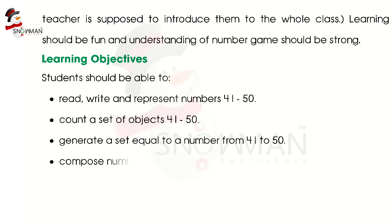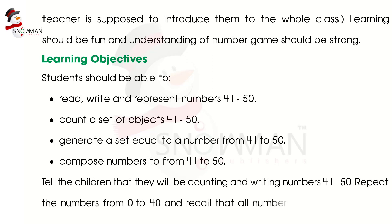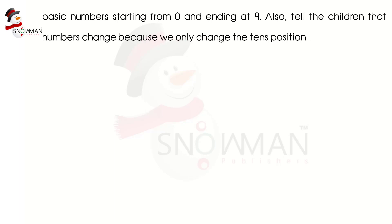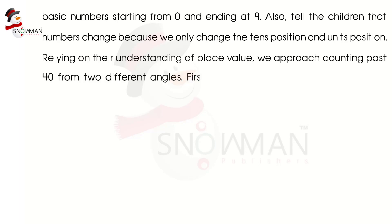Compose numbers from 41 to 50. Tell the children that they will be counting and writing numbers 41 to 50. Repeat the numbers from 0 to 40 and recall that all numbers are combinations of basic numbers starting from 0 and ending at 9. Tell the children that numbers change because we only change the tens position and units position, relying on the understanding of place value. We approach counting past 40 from two different angles.